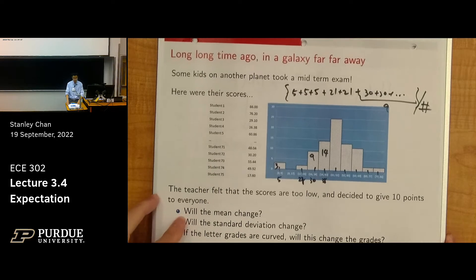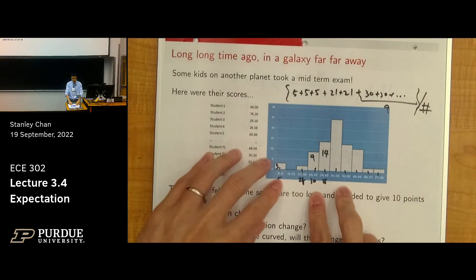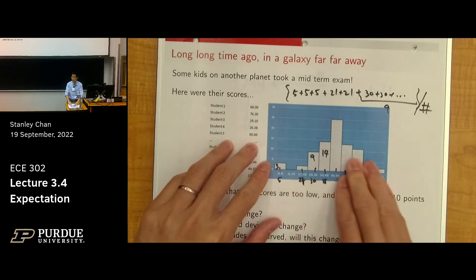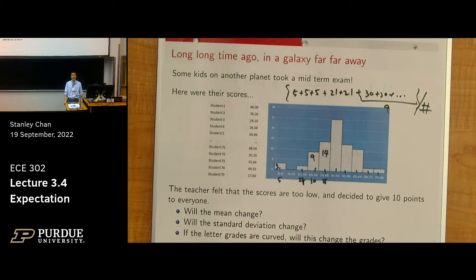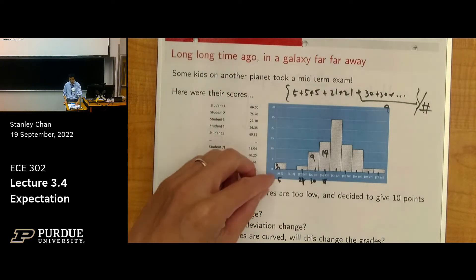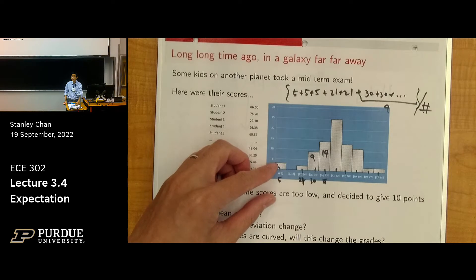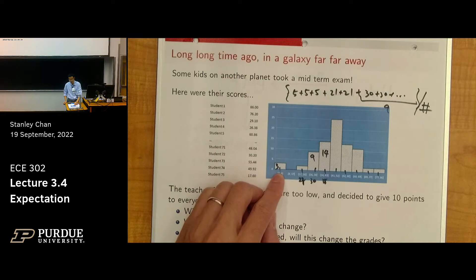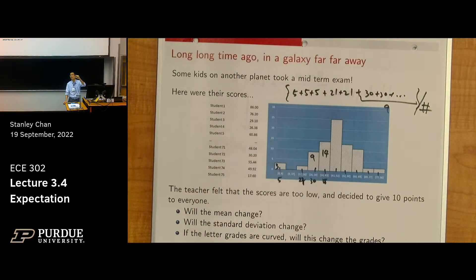To start with, I want to go back to the example where you have a midterm exam score distribution. I asked: how do we calculate the average by just looking at this histogram without going through the table? The discussion was to count the number of students in each bin, multiply the height of the bin with the midpoint of the bin, and sum everyone up. Then you get the approximate value of the average, which is pretty good.